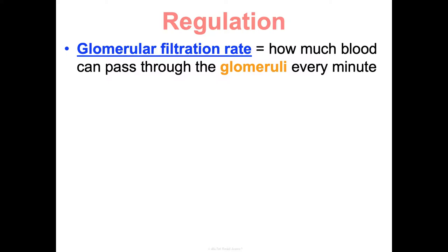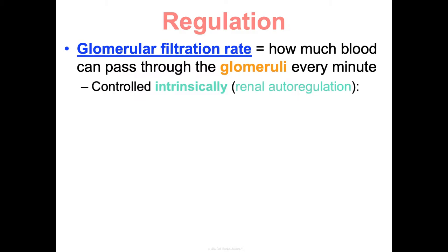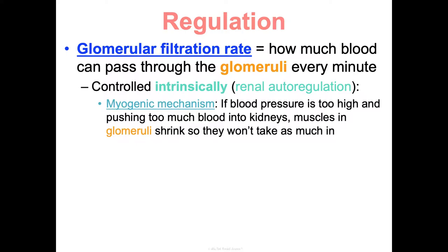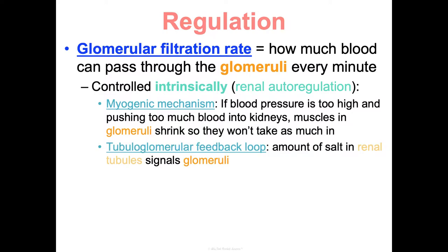The glomerular filtration rate measures how much blood passes through the glomeruli every minute. It's controlled intrinsically through renal autoregulation and extrinsically through your endocrine and nervous system. Intrinsically, the kidneys self-regulate via a myogenic mechanism: if blood pressure is too high, the muscles in your glomeruli will shrink to limit intake. There's also a negative feedback loop between the renal tubules and glomeruli based on salt levels to prevent the kidneys from getting overwhelmed.